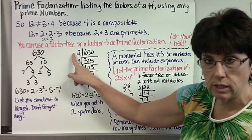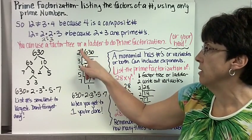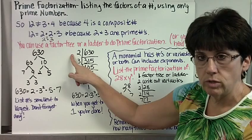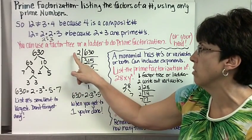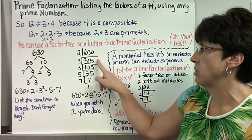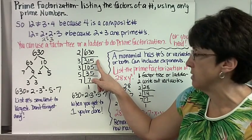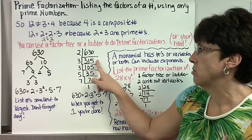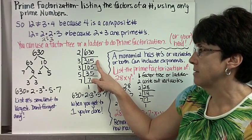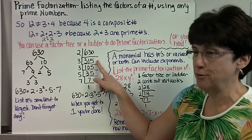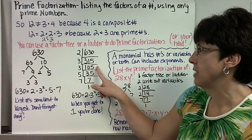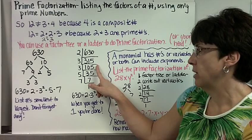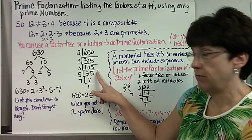Now let's show you in a ladder. 630, I make the bar, and I always start with 2 if it's an even number. I try to start with my smallest numbers and go in order. So 2 divides into 630 315 times. I know 3 goes into 315 because of the divisibility rules, which I'll tell you on the next page. But it does 105 times. 3 goes into 105 35 times.